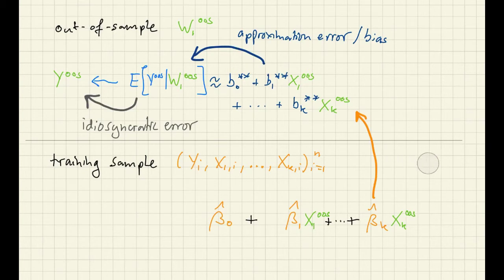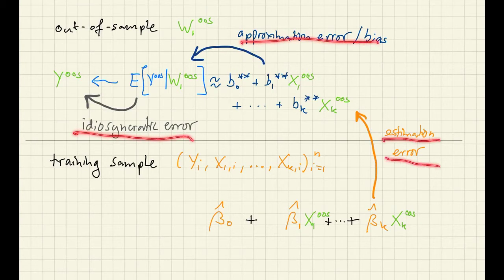Finally, we have to estimate this guy. And we will not be able to figure out these coefficients exactly. So there will be estimation error when we replace them by the OLS coefficients. So that is some additional source of error. And this is called the estimation error. So whenever you are dealing with prediction, you have to deal with these three sources of error.